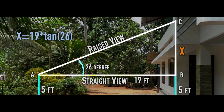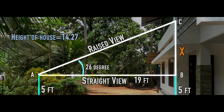We have a right triangle. The opposite side over adjacent side is tan(26°), so x divided by 19 equals tan(26°). That gives x equal to 19 multiplied by tan(26°), which is approximately 9.27. Therefore the total height is x plus 5, that is 9.27 plus 5, which equals 14.27 feet.